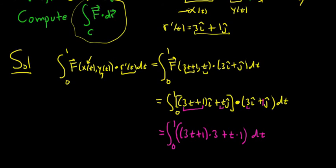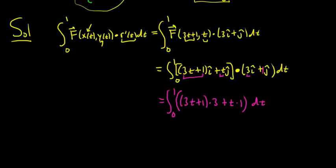So now we have a regular integral, just a one variable integral. Pretty easy now. Once you get through the notation it's really not that bad. So 0 to 1. So 3t times 3 is 9t. 3 times 1 is 3. Then you have a t here. This is the definite integral from 0 to 1. t plus 9t is 10t plus 3 dt.